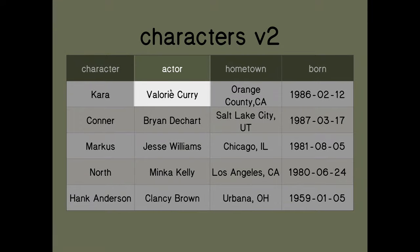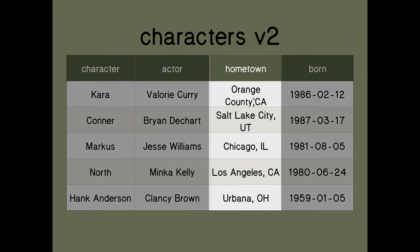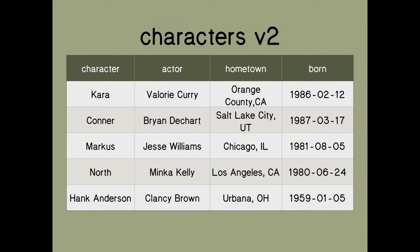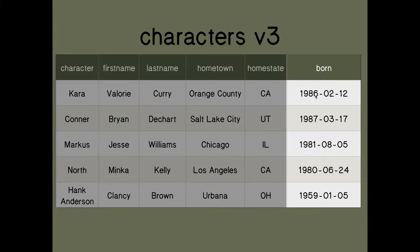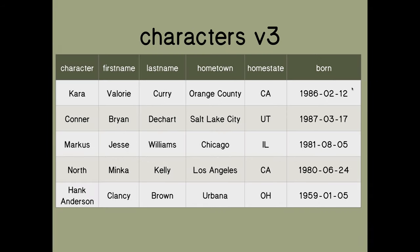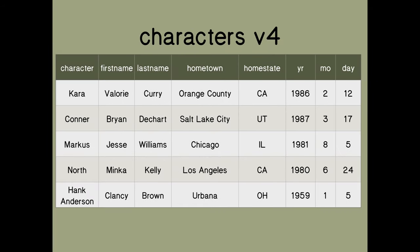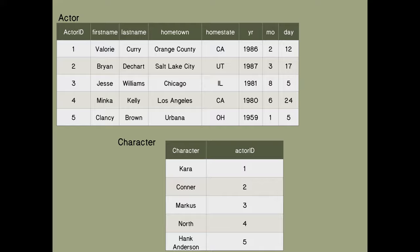Or we might think, well, Valerie Curry has a first name and a last name, so maybe we should divide that information up. And this hometown has a town and a state. So we could design something like this where we have a character, first name, last name, hometown, home state, and when they were born. And we could keep going and think, well, born has a year, a month, and a date — maybe we should divide those into separate columns too.